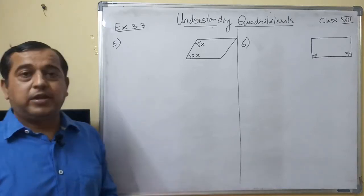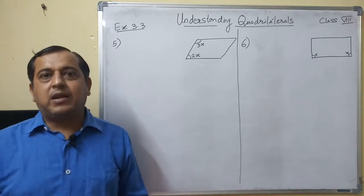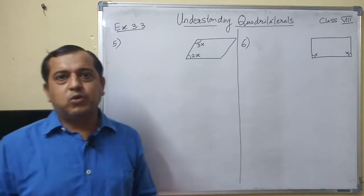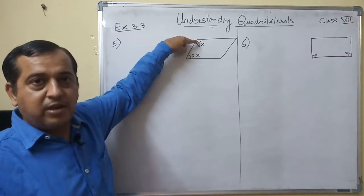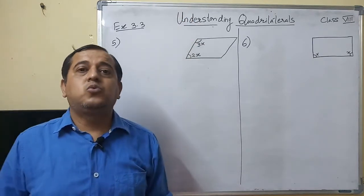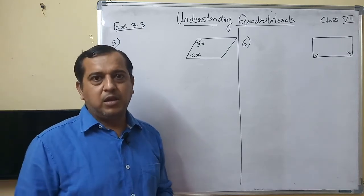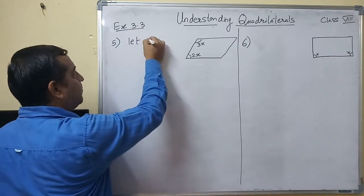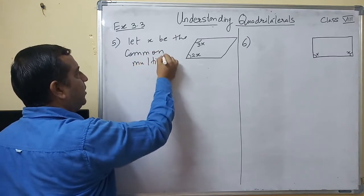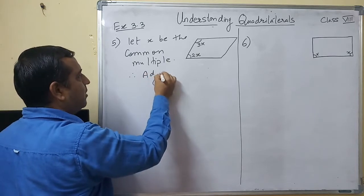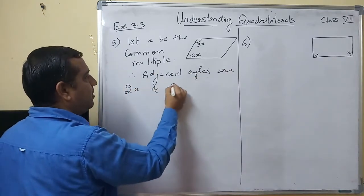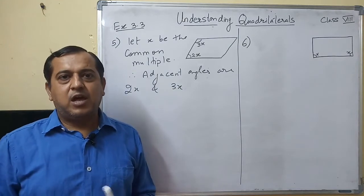We come to problem number five of exercise 3.3. In this case, it is given that in a parallelogram the adjacent angles are in the ratio 2 is to 3. These two adjacent angles are in the ratio 2 is to 3. So we take x as the common multiple. Let x be the common multiple. Therefore adjacent angles are 2x and 3x.